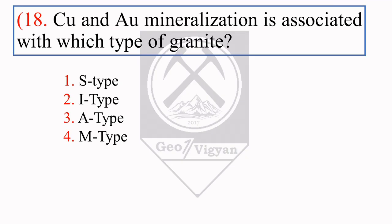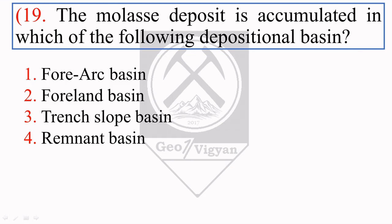The next question: Cu and Au mineralization is associated with which type of granite? There are four types: S-type (derived by melting of sedimentary rock), I-type (by partial melting of igneous rock), A-type (anorogenic granite), and M-type (derived by partial melting of mantle material). Cu (copper) and Au (gold) are mobile, incompatible elements showing affinity toward liquid, mostly found in the mantle or core. So their mineralization is associated with M-type granite.